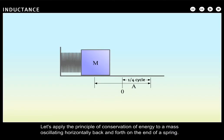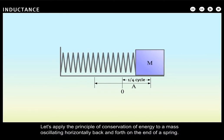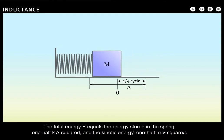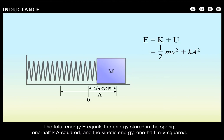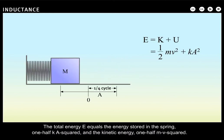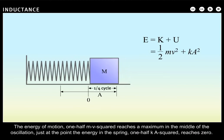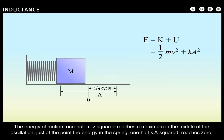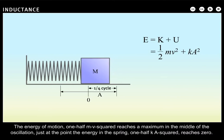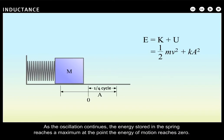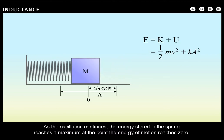Let's apply the principle of conservation of energy to a mass oscillating horizontally back and forth on the end of a spring. The total energy E equals the energy stored in the spring, one-half K A squared, and the kinetic energy, one-half M V squared. The energy of motion, one-half M V squared, reaches a maximum in the middle of the oscillation, just at the point the energy in the spring, one-half K A squared, reaches zero. As the oscillation continues, the energy stored in the spring reaches a maximum at the point the energy of motion reaches zero.